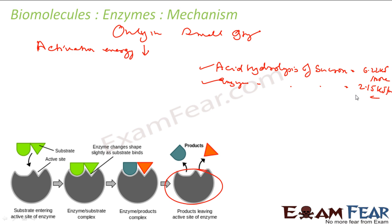Enzymes generally provide an alternate pathway for the reaction. Sometimes they form a temporary intermediate complex which can easily be broken. They also reduce the entropy change for a reaction by bringing two substrates together and providing proper orientation for the reaction to happen. So enzymes facilitate reactions either by bringing substrates together or by forming an intermediate compound that is easy to break.